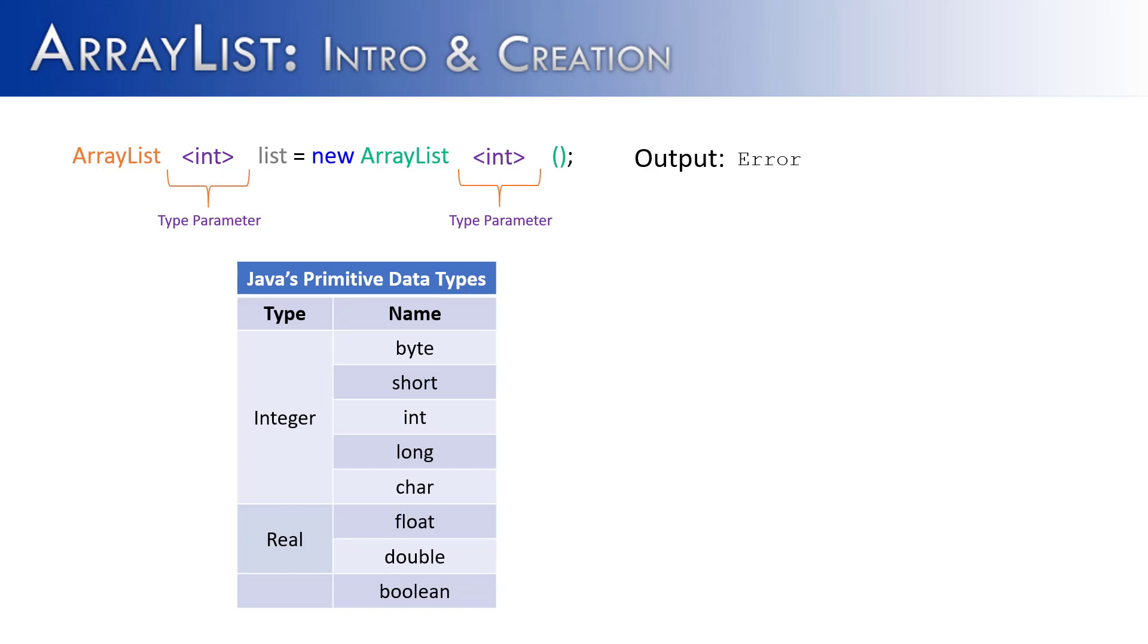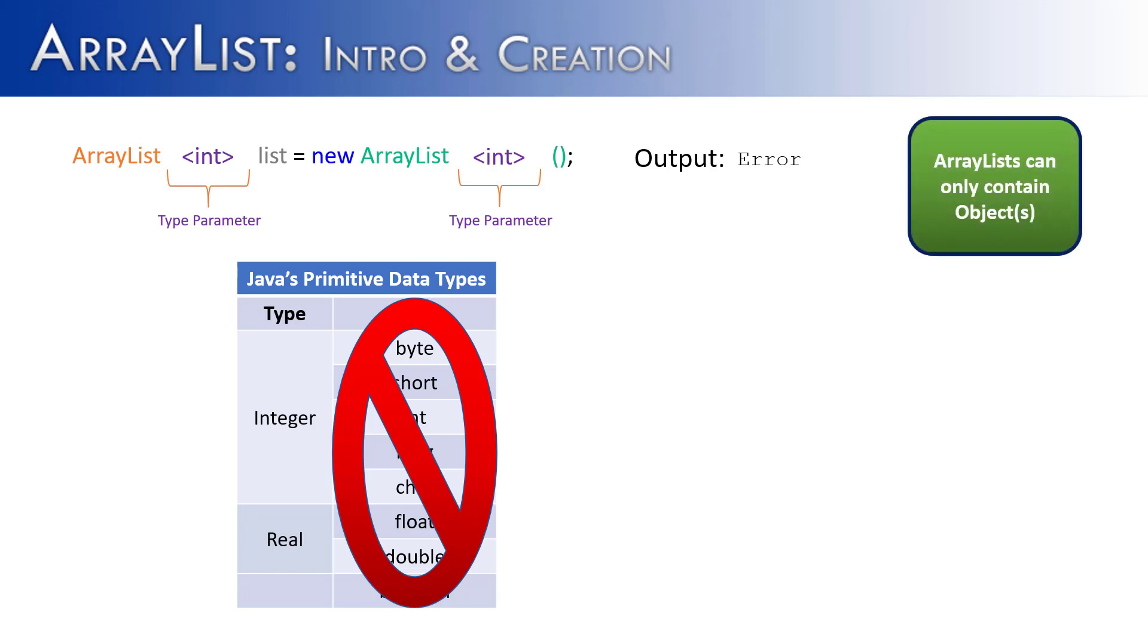Along with byte, short, long, char, float, double, and Boolean. These primitive data types cannot be used inside of an ArrayList. ArrayList must contain objects.